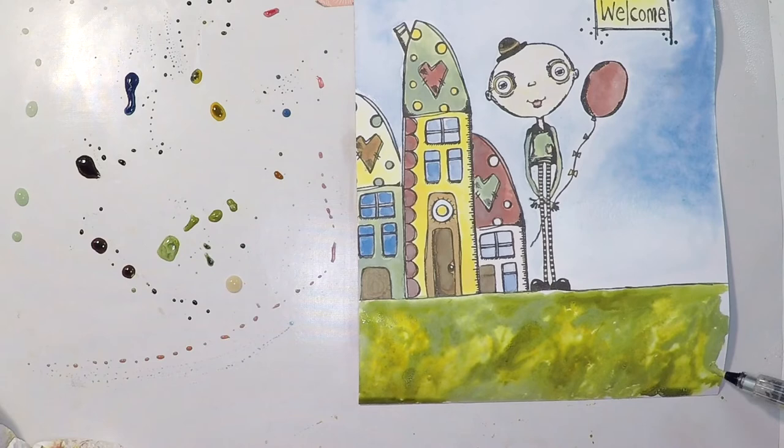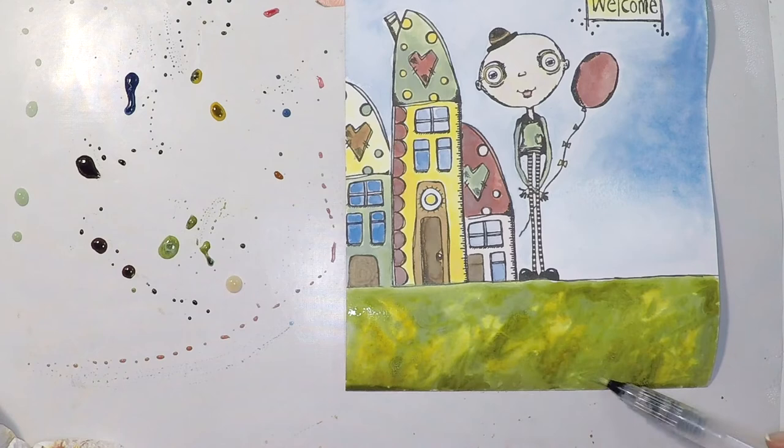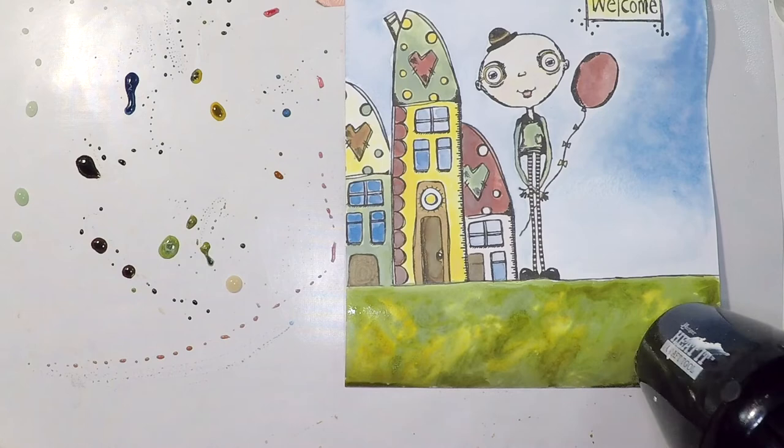I'll just need to make sure that it's completely dry. So I'll use my heat tool. And once everything is absolutely dry, then I will just mount this on top of a piece of dark cardstock. Just to frame it and to make it pop up a little bit.